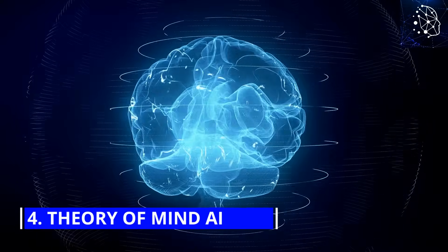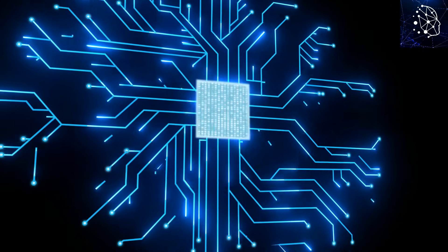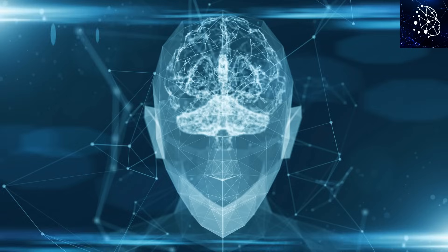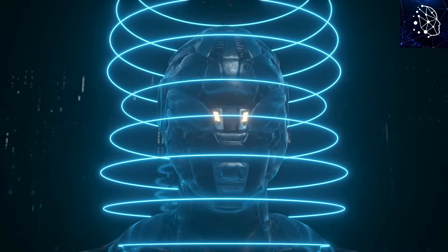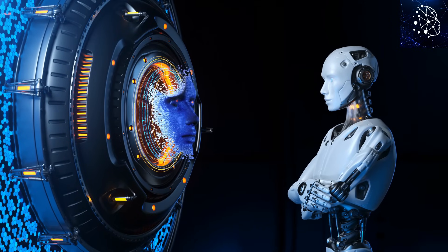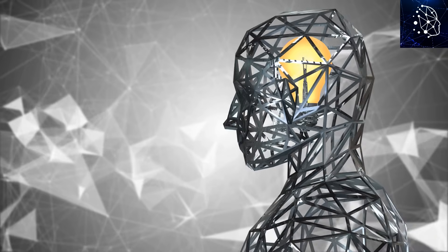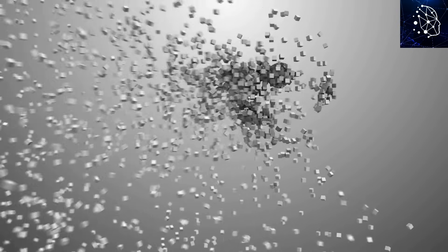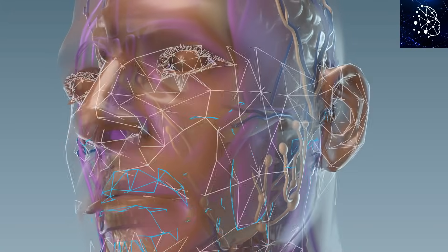Number 4: Theory of Mind AI. Theory of Mind AI, a future concept, aims to understand and potentially replicate human emotions and mental states. This level of AI would interact more effectively with humans by interpreting emotional responses and experiences, adapting behavior accordingly. While still theoretical, it represents a significant leap towards empathetic AI. This AI would not only recognize speech patterns but also the emotional context behind them, enhancing human-AI interaction. However, actualizing this level requires advancements in understanding human psychology and neurology.